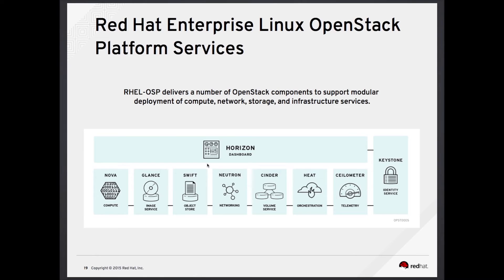For storage, we have three elements. There is Cinder, which provides block storage or volumes — a service that manages storage volumes provided to those virtual machines or instances. Another storage-oriented service is Glance, which acts as the registry for virtual machine images, allowing users to copy server images for immediate storage and execution. The last storage element is Swift, which performs object storage, allowing users to store and retrieve files. To clarify the separation: Glance is focused on images, Swift on objects or files, and Cinder on blocks or disks.